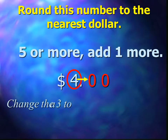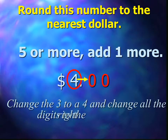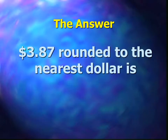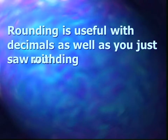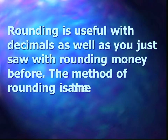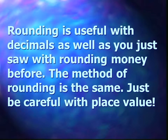Once we've done that, we change the three to a four and change all the rest of the digits to the right to zeros. So the answer: $3.87 rounded to the nearest dollar is $4. If I asked you how much money you had, you would say, 'I have about $4.' Rounding is useful with decimals as well, as you just saw with rounding money. The method of rounding decimals is just the same. You still have to be careful with place value.